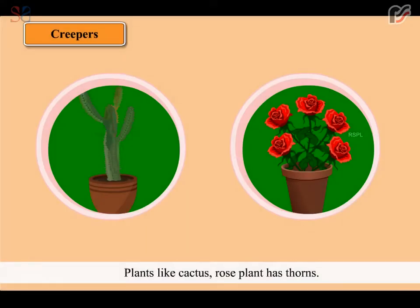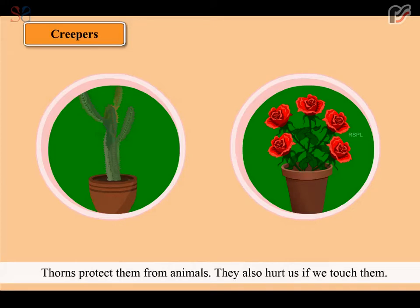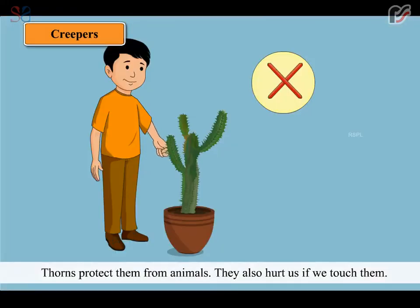Plants like cactus and rose plant have thorns. Thorns protect them from animals. They also hurt us if we touch them.